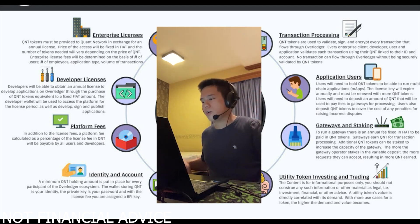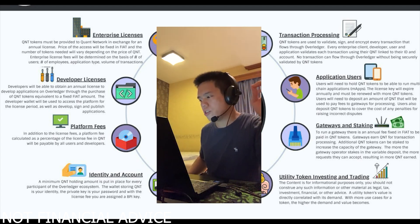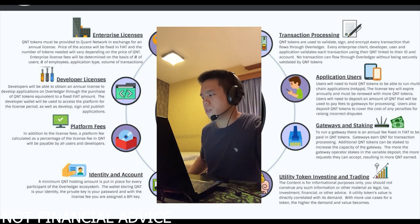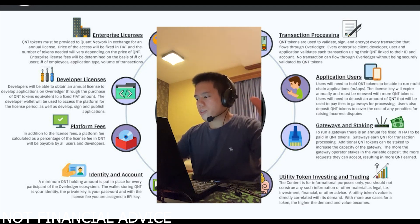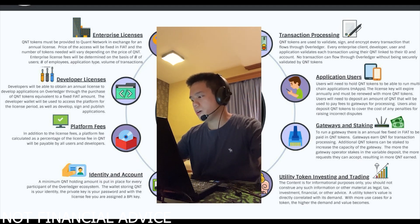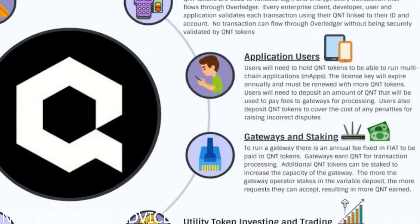Number six, the QNT token can be used for application users. Users will need to hold QNT tokens to be able to run multi-chain applications. The license key will expire annually and must be renewed with more QNT tokens. Users will need to deposit an amount of QNT that will be used to pay to gateways for processing.